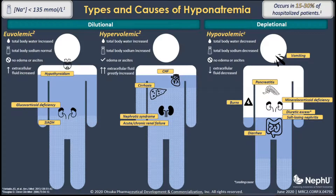Next, we can have a hypervolemic hyponatremia, where we have an increased total body water that exceeds our increase in total body sodium. We generally see a large increase in extracellular fluid, which may bring with it pulmonary congestion, edema, or ascites that can be found on physical exam. Plasma evaluation typically shows an elevated BNP and a high BUN. We see hypervolemic hyponatremia with conditions like congestive heart failure, cirrhosis, nephrotic syndrome, and acute or chronic kidney failure.